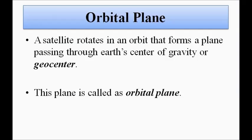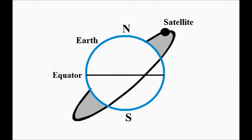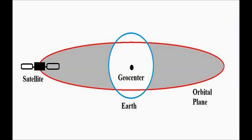First is the orbital plane. We know that a satellite moves around Earth in a well-defined path — it can be circular or elliptical. As it moves, it forms a plane, and this plane is called the orbital plane. The center of this plane is the center of the Earth's mass, which is called the geocenter.